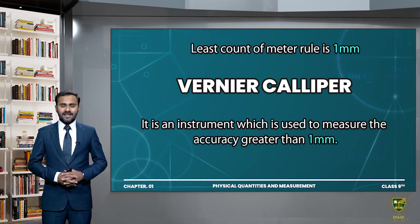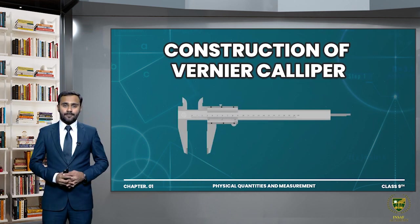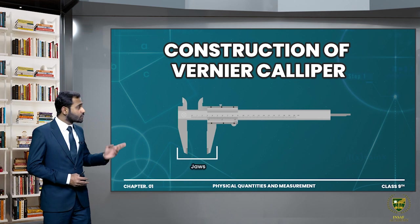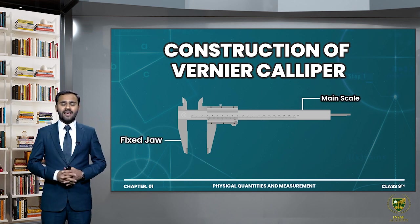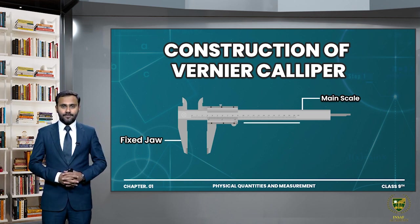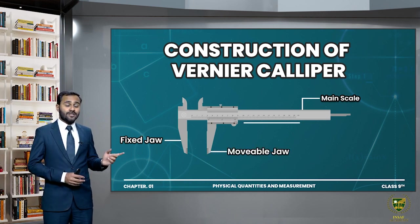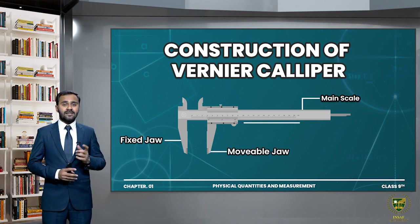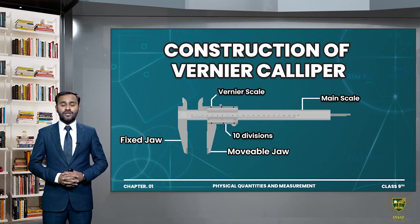First of all, let's discuss the construction of Vernier Caliper. As you can see, this is Vernier Caliper. Here are two jaws of Vernier Caliper. One jaw is fixed with the main scale, and the main scale has readings mentioned in centimeters and millimeters. Similarly, there is a movable jaw which you can move, and with it the Vernier scale is also present, which has 10 further divisions.